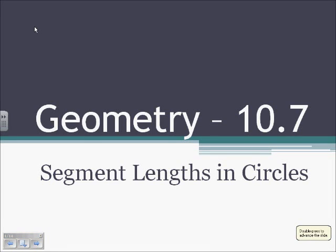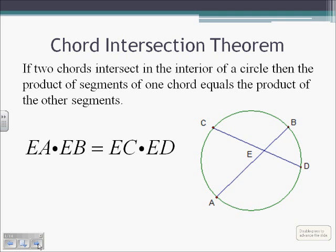Section 10.7, Segment Lengths in Circles. First we have the Chord Intersection Theorem. If two chords intersect in the interior of a circle, then the product of segments of one chord equals the product of the other segments.